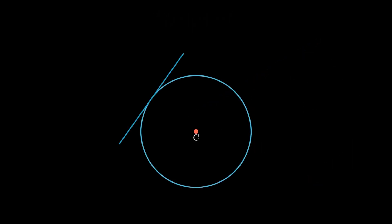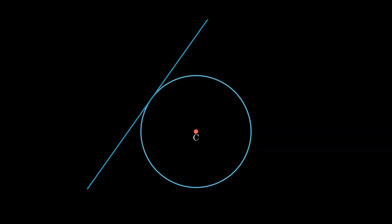As a tangent is a line, it can be extended infinitely in both directions. So a question arises: what should be the length of a tangent to a circle? Will it be infinite? The answer to this question is no.